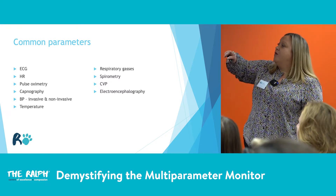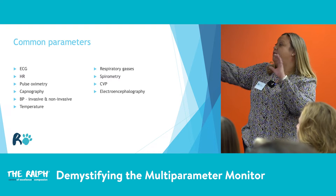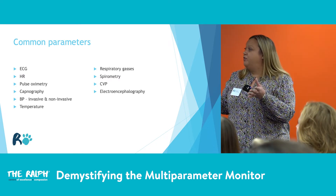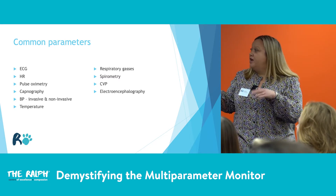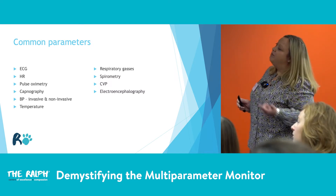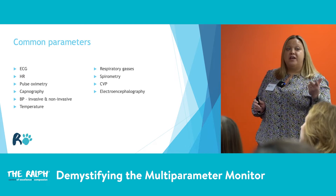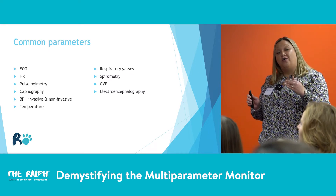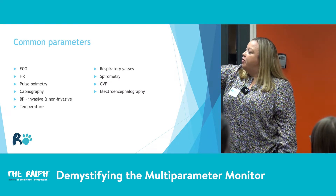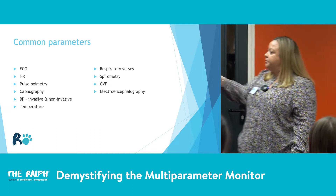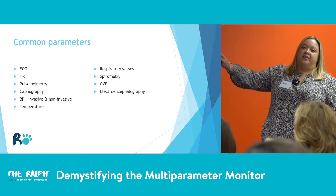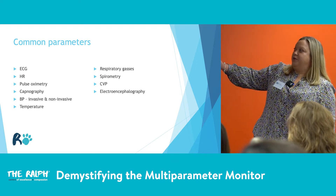We've got our heart rate; if we've got the luxury of arterial blood pressure, we've got arterial blood pressure monitoring, which is our gold standard with anaesthesia. We've got our pulse oximetry, capnography over on the left, and spirometry which gives us information on the patient's breathing and lung capacities. Down the bottom we've got all our basic parameters: NIBP, temperature, respiratory gases, and so on.